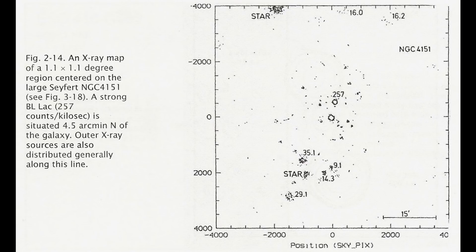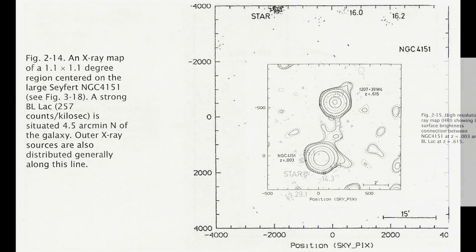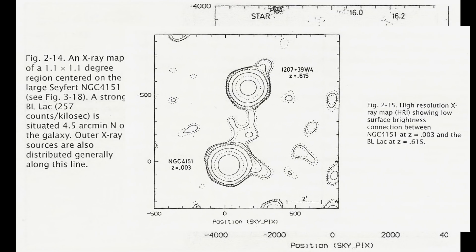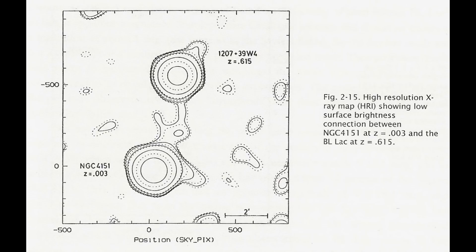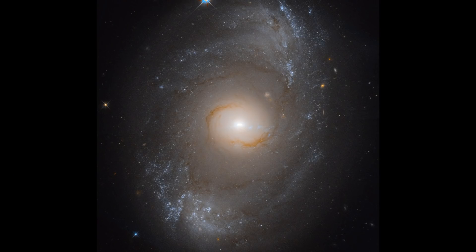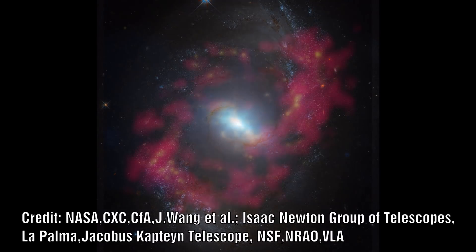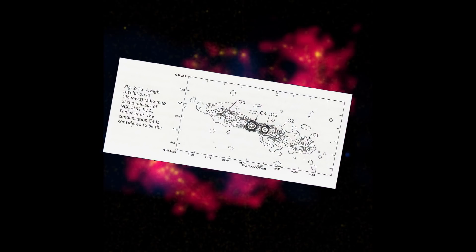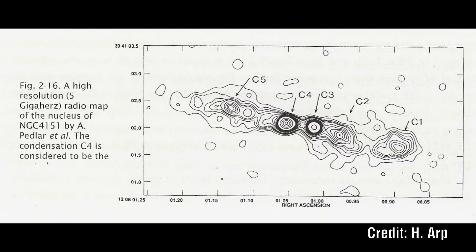To the north there is also a very strong X-ray source that is associated with a BL-LAC object. Detailed X-ray images also reveal what appears like a connection between this object and the galaxy NGC 4151 which are both at different redshifts. High resolution radio imaging of the nucleus also reveals what looks like further material being ejected from the nucleus.